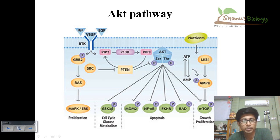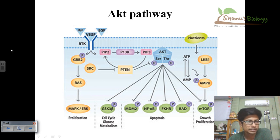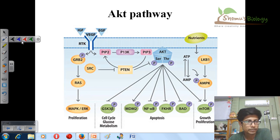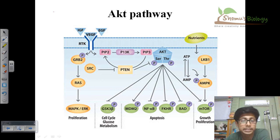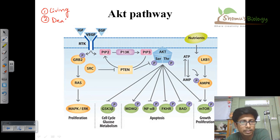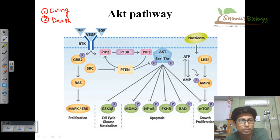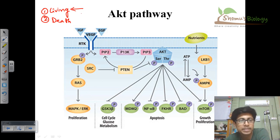The AKT pathway is related to the living pathway of the cell. There are two different types of pathways depending upon what they tell the cell to do — one is a living pathway, another one is the death pathway. AKT, PI3 kinase, and mTOR, all these pathways ultimately lead the cell towards living — meaning cell growth and cell proliferation — rather than death.